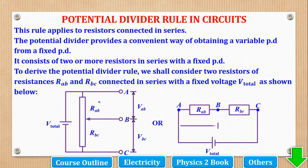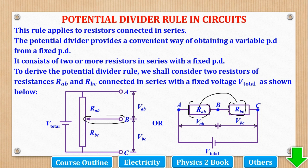Another way is when you have two separate resistors — RAB and RBC separate. Still here, you can also use the potential divider rule. The potential divider rule is used when there is a slider or when there are resistors in series.